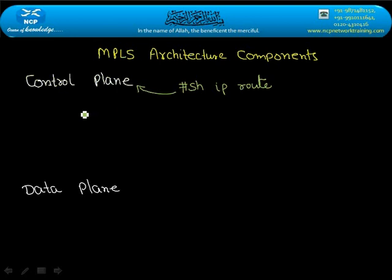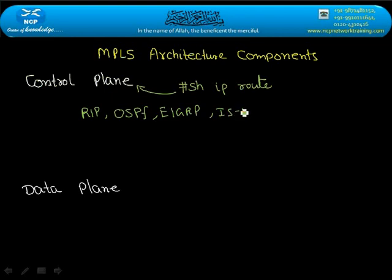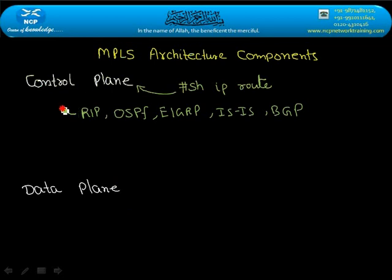The routing protocols are: RIP, OSPF, EIGRP, ISIS, and BGP. RIP, EIGRP, ISIS, and BGP are all part of the control plane. This control plane helps build the routing table.